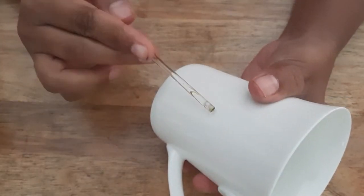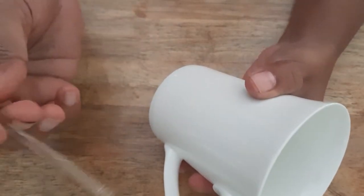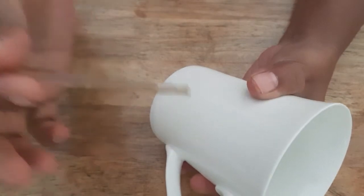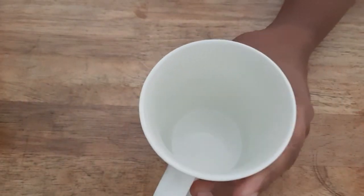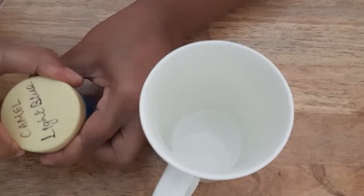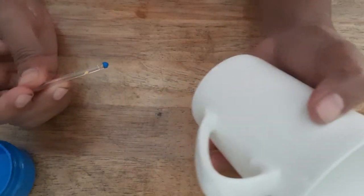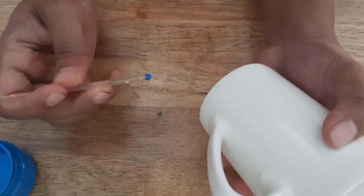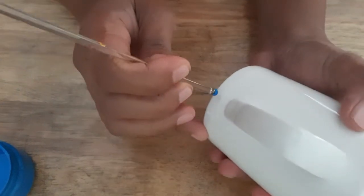So this is the mug that I'm going to paint on and I'm using this tool to paint initially with light blue color. When you paint on mugs you need to be really slow and steady, so I'll start from this place.